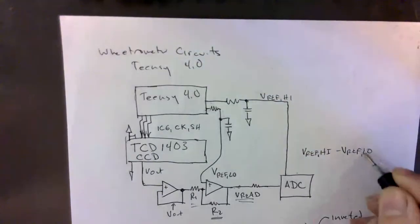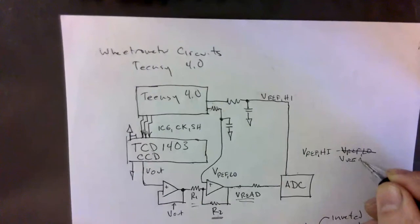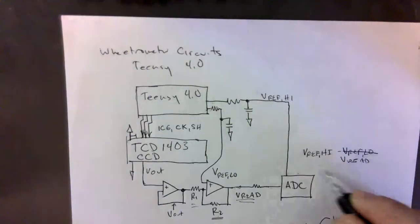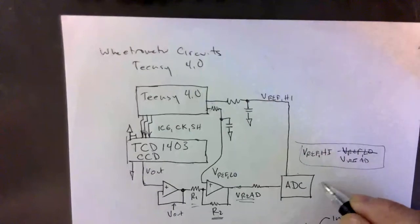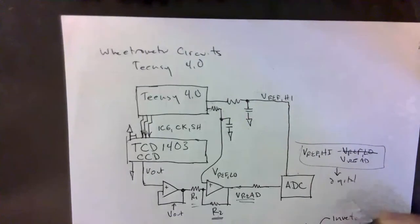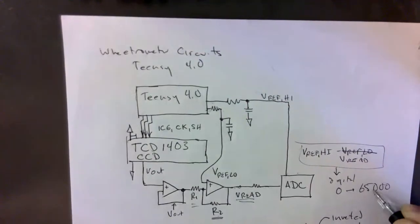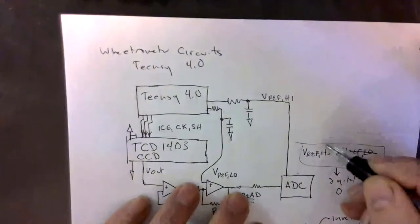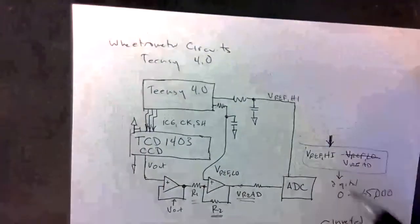Not V ref low minus V read, and maps that to a digital value between zero and 65,000 roughly. Now by adjusting V ref high we can adjust our scale.